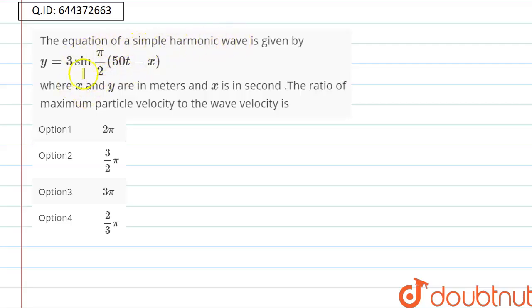The equation of a simple harmonic wave is given by y = 3 sin(π/2)(50t - x), where x and y are in meters and x is in seconds. The ratio of maximum particle velocity to the wave velocity is...